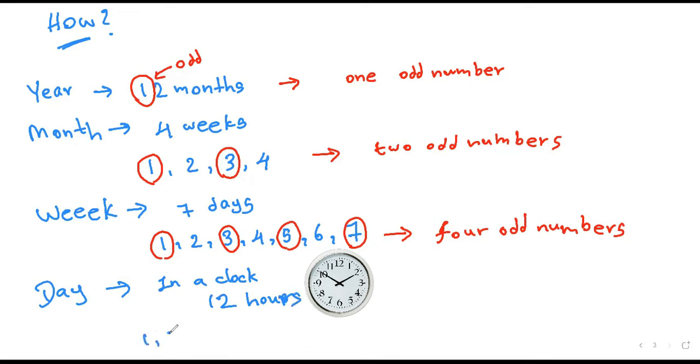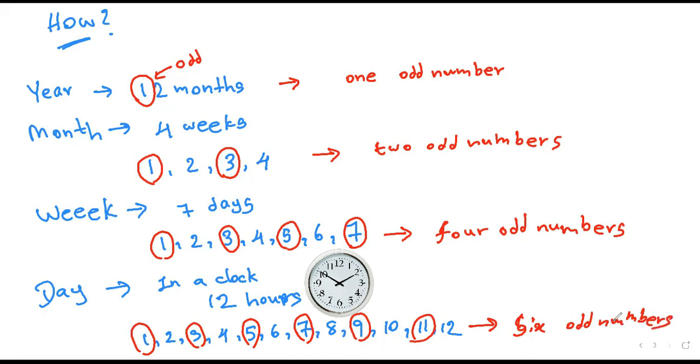One, two, three, four, five, six, seven, eight, nine, ten, eleven, twelve. One, three, five, seven, nine, and eleven - six odd numbers.